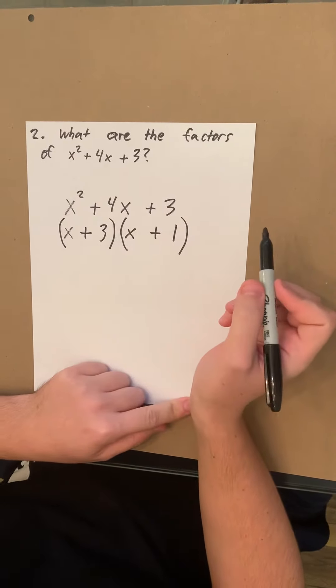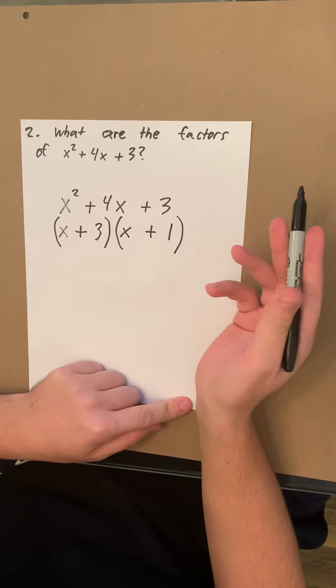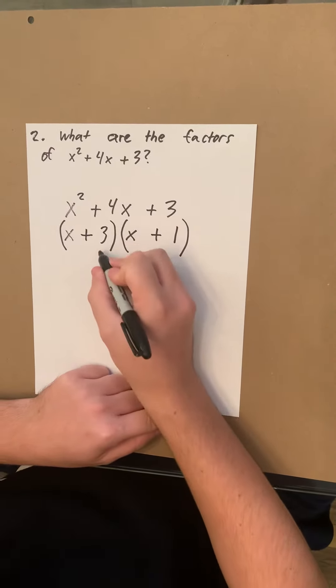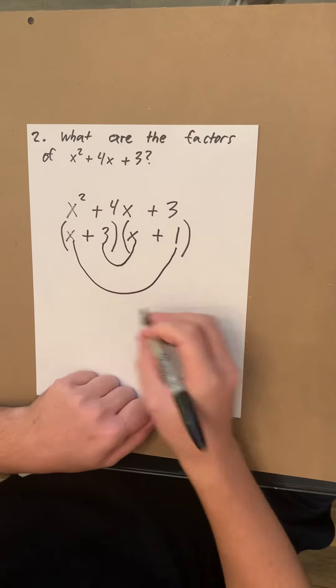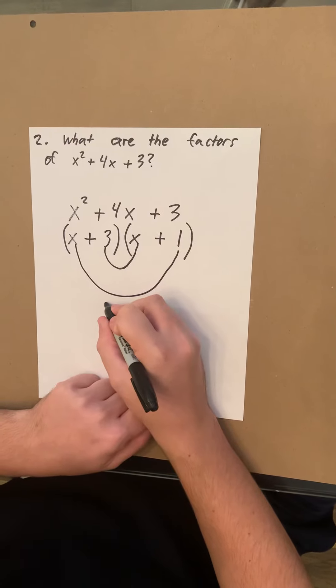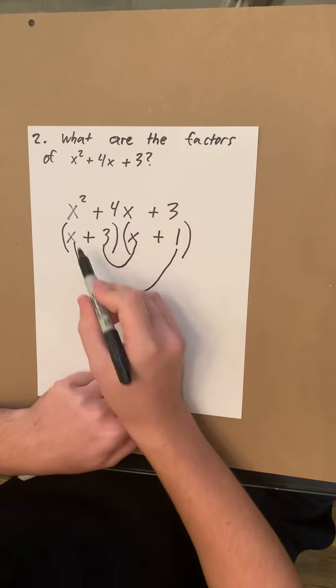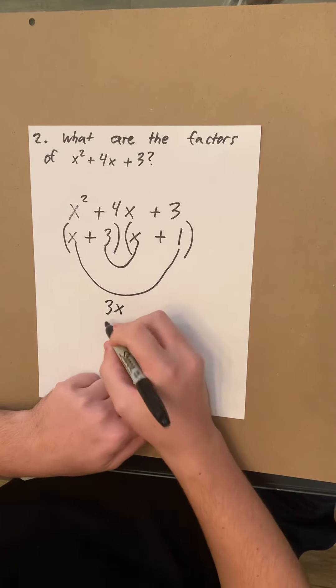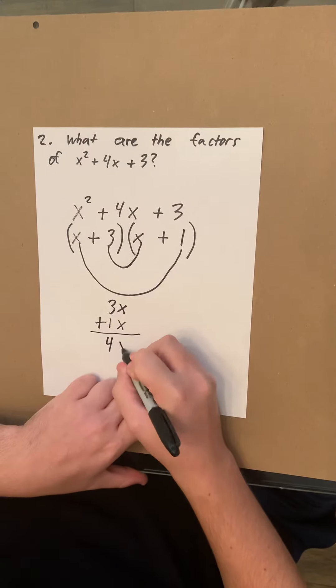Now to double check your work or to make sure it's correct, because when negatives get introduced it gets a little trickier. What you're gonna do is multiply these two together, multiply these two together and then add them up. So you're gonna get 3x, and then x times 1 is just 1x. Add those up and you get 4x.